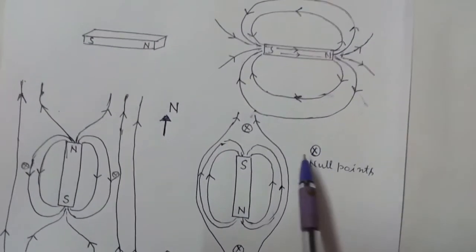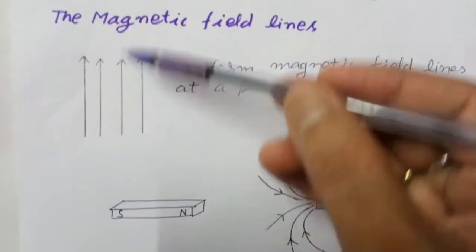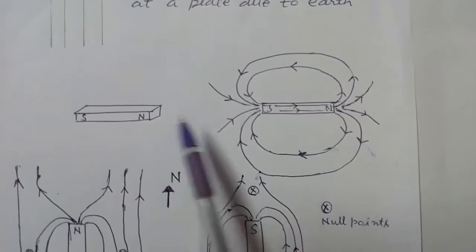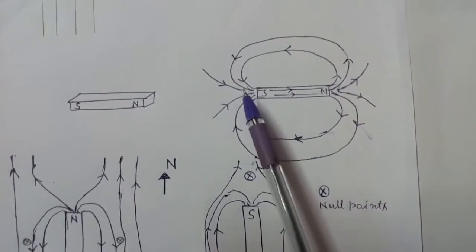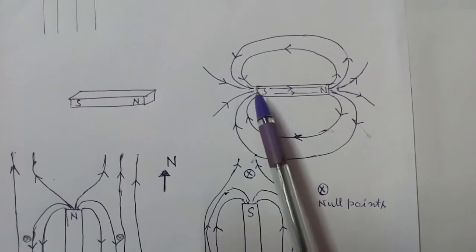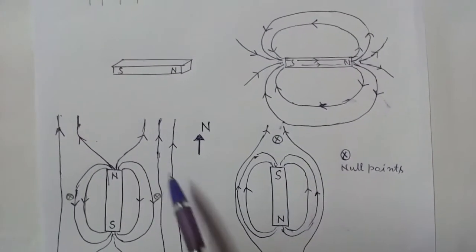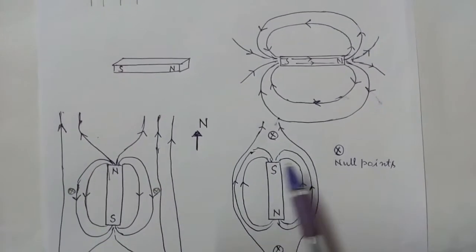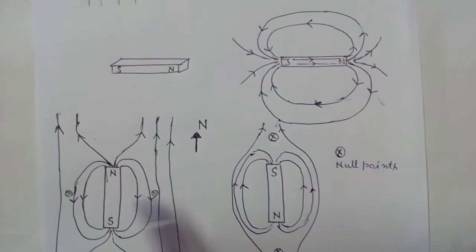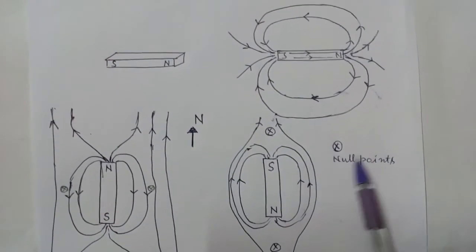This cross represents a null point, where the net field is zero.